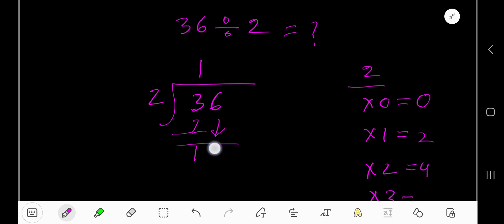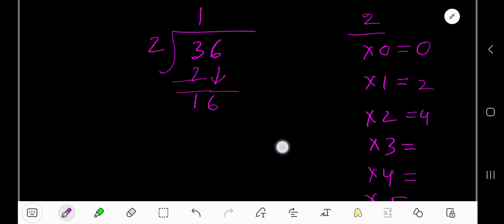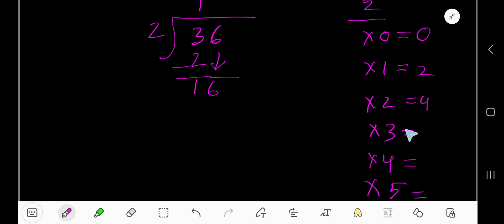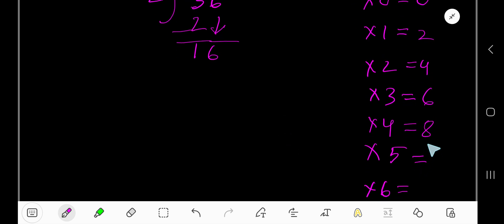down this 6. 2 goes into 16 how many times? 8 times. Let me show you that. 2 times 3 equals 6, 2 times 4 equals 8, then 2 times 5, just add 2, 8 plus 2 equals 10, 10 plus 2 equals 12.